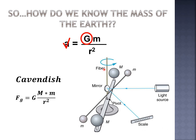Cavendish set up an experiment using a fiber — when you rotate a fiber or cable, there's a torsional force that pushes back. He set up a rod with two masses hanging from this fiber, which were then brought closer to two other masses sitting on a stone tablet. That tablet was floating on a pool of mercury, which isolated the experiment from outside vibrations, keeping the data accurate. He used a light source reflecting off a mirror onto a scale to measure how much the fiber rotated.